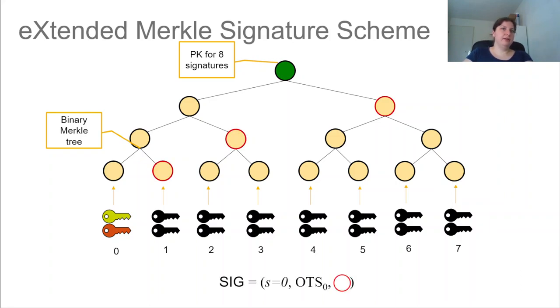And this changes a bit what the signature looks like. So for a one-time signature pair, which we saw here on the left, we just had a OTS signature zero. But the Merkle scheme or XMSS in this case also adds the state as in the signature, so that the verifier knows which leaf of the Merkle tree is being signed with,